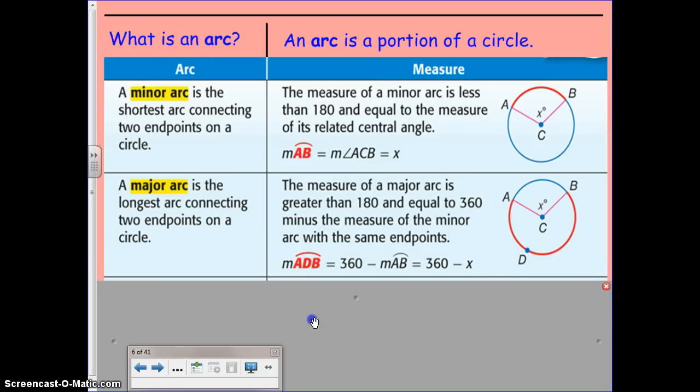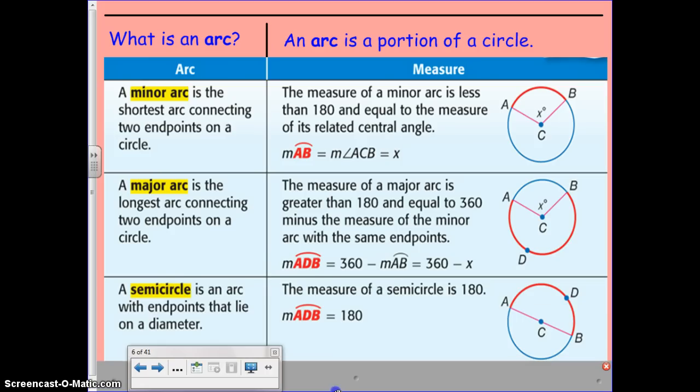whereas major arcs are greater than 180 degrees. The major arc is the longest arc connecting two endpoints on the circle, and it would be 360 minus this angle to give us the measure of both this major arc and the angle in here. And semicircles, which I'm sure you are familiar with, are equal to 180 degrees.